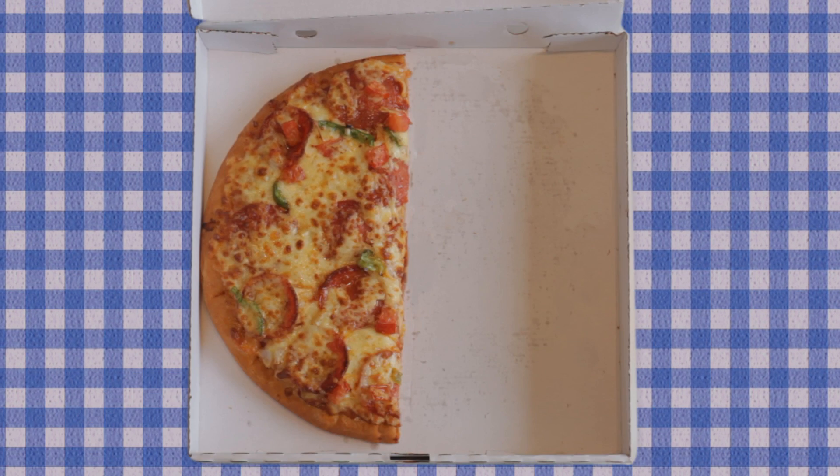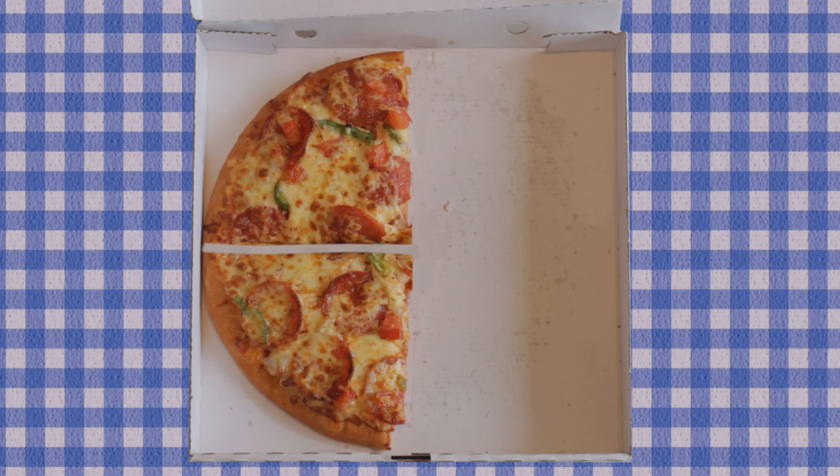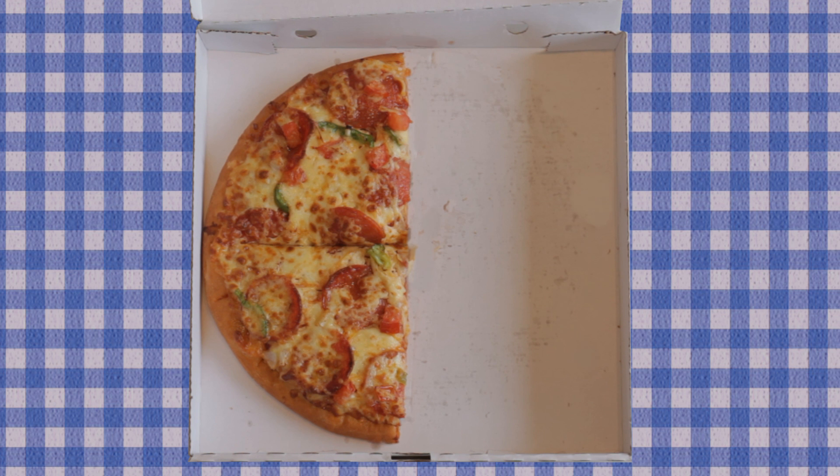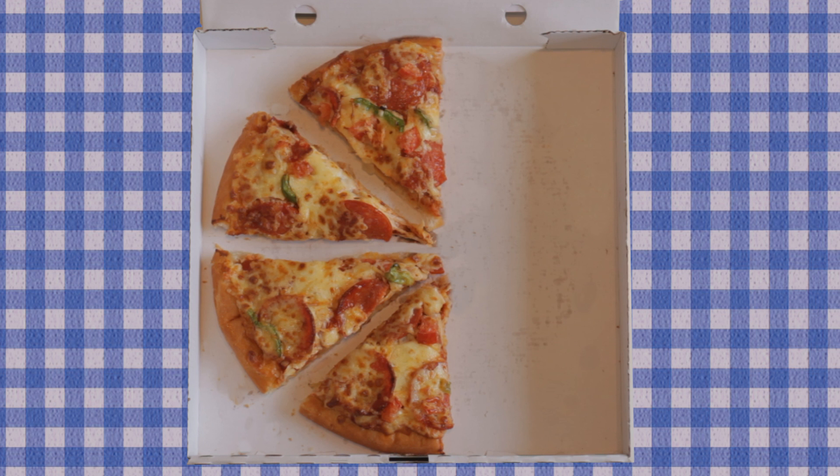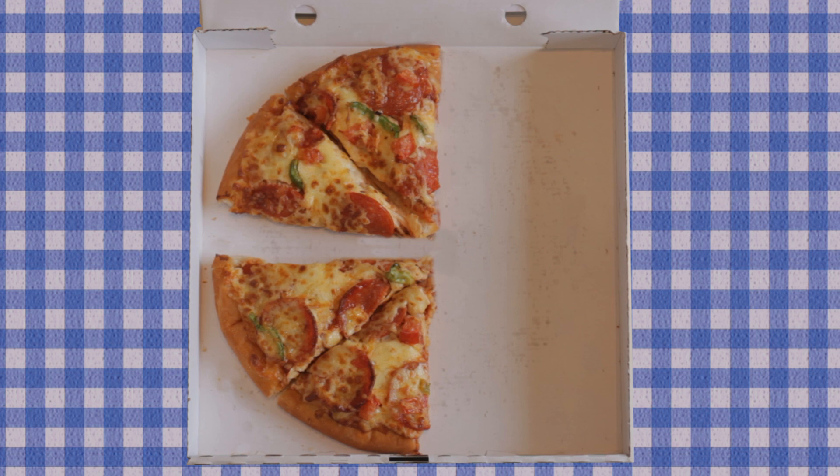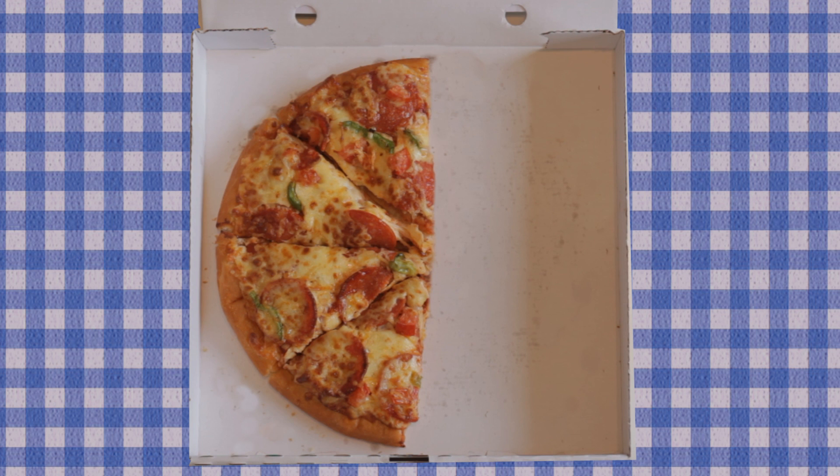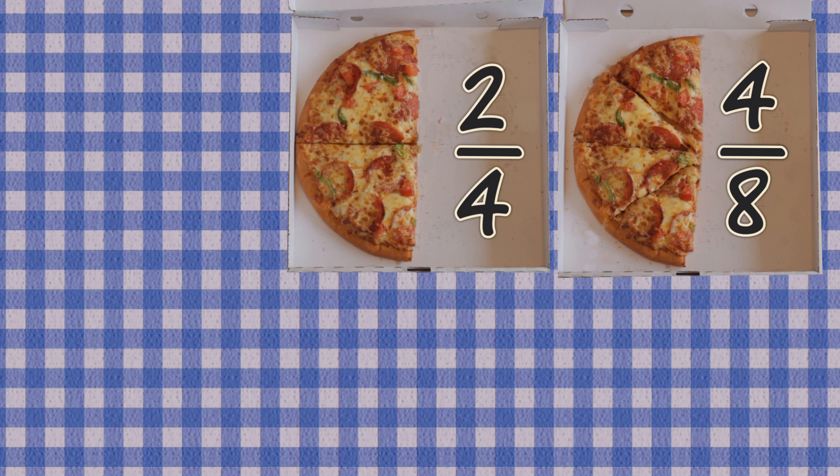Here is half a pizza. This is two-fourths of a pizza, and it is still half a pizza. Now it is four-eighths, and two-fourths, and a half. These are all equivalent fractions.